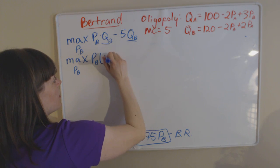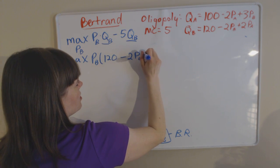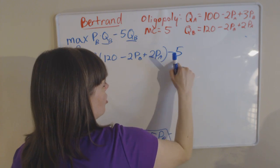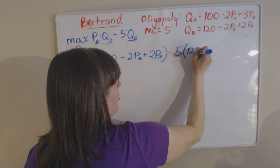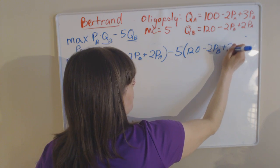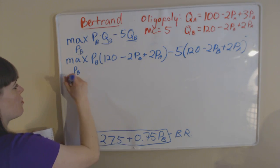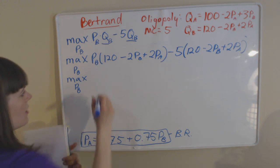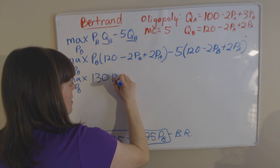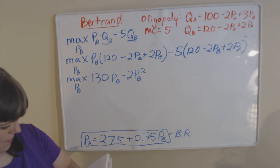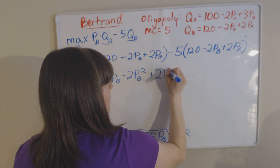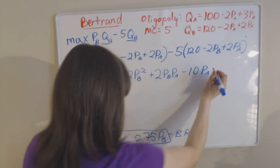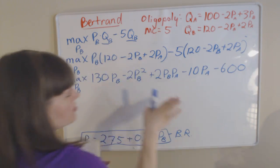Price times quantity is taken from firm B's demand function, minus marginal cost times quantity, which we again take from firm B's demand function. That long expression is our profit maximization problem and when we simplify it, we get: maximize 130·PB minus 2·PB² plus 2·PB·PA minus 10·PA minus 600. That's just algebra to simplify the expression.